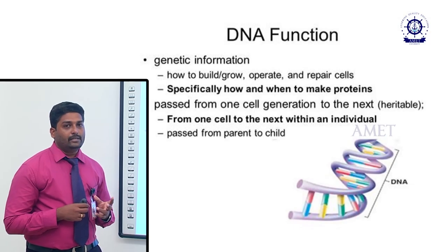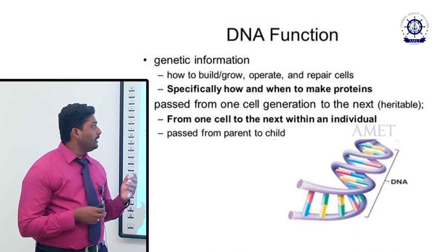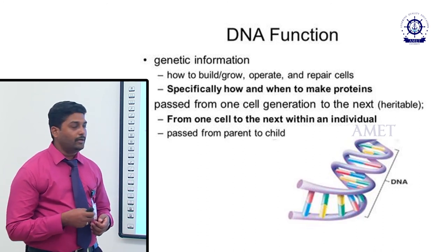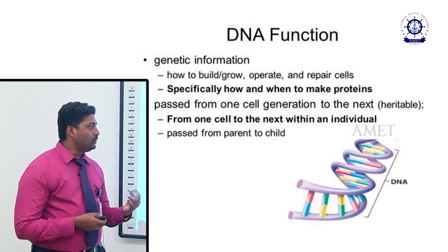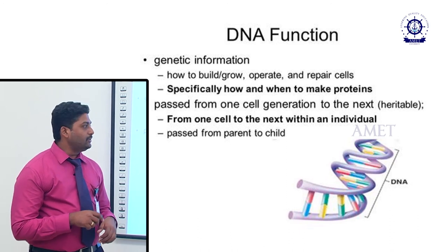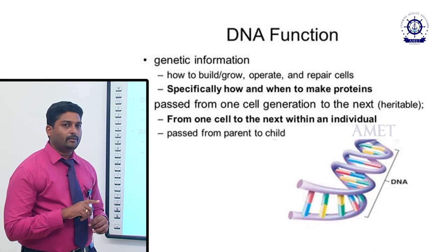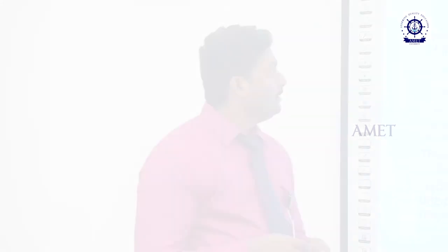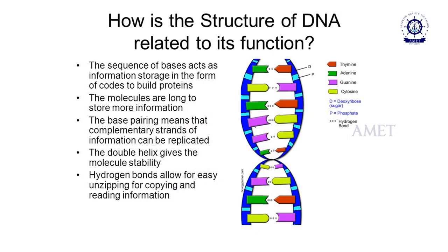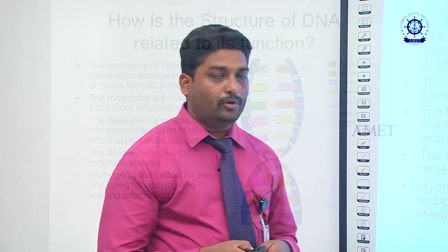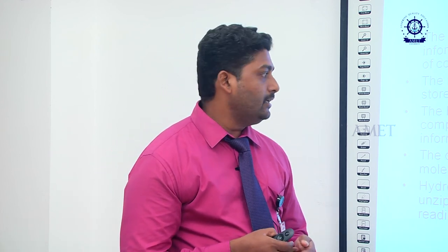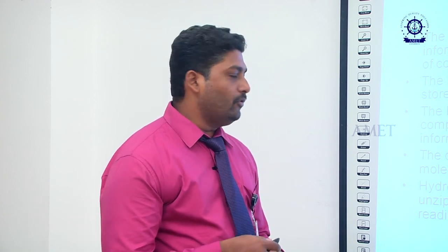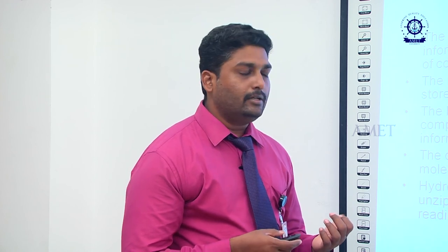The main function of DNA is genetic information storage. It carries instructions on how to build, grow, operate and repair the cells of our body, and specifically how and when to make proteins. This information is passed from one cell generation to the next, and from parent to child. The sequence of bases acts as information storage in the form of codes to build proteins. These molecules are long to store more information. The double helix gives the molecule stability, and hydrogen bonds allow easy unzipping for copying and reading the information from the DNA.